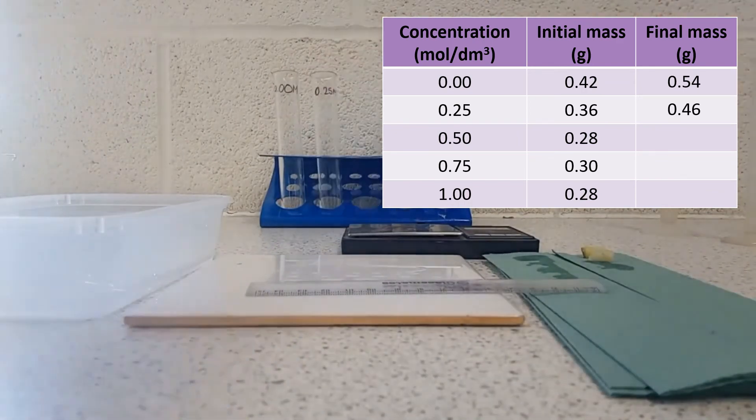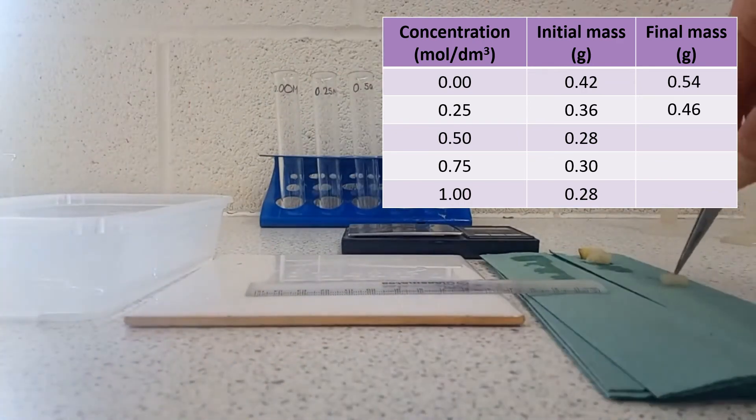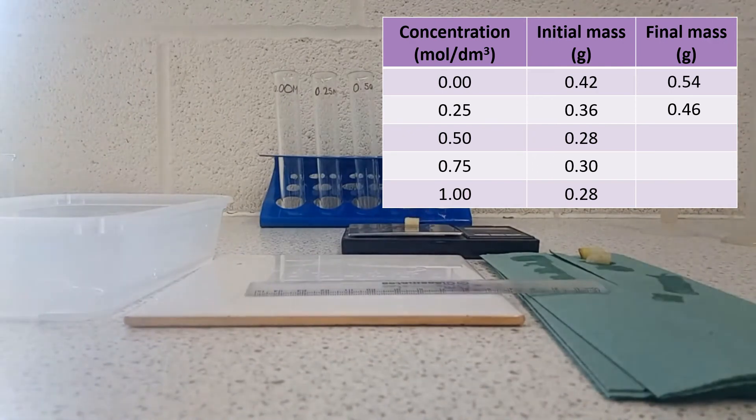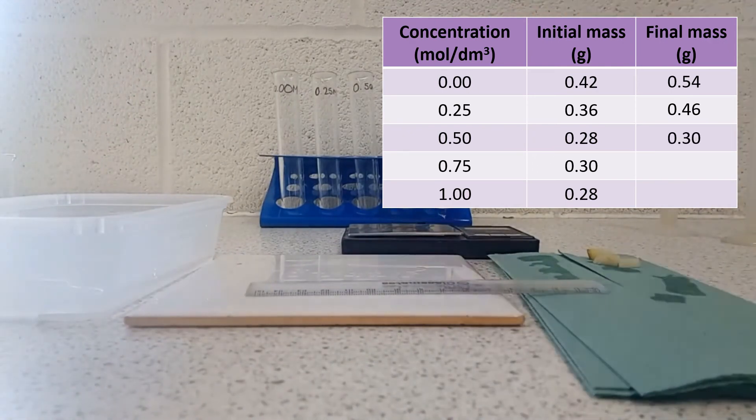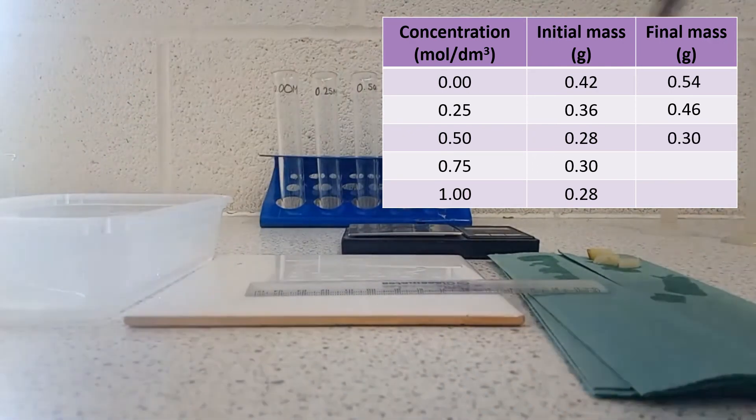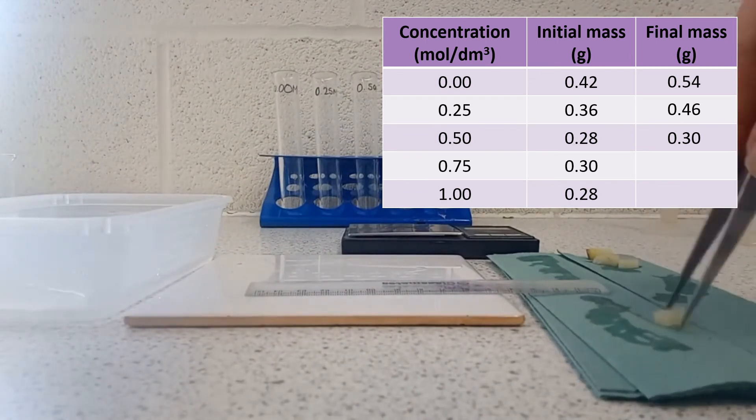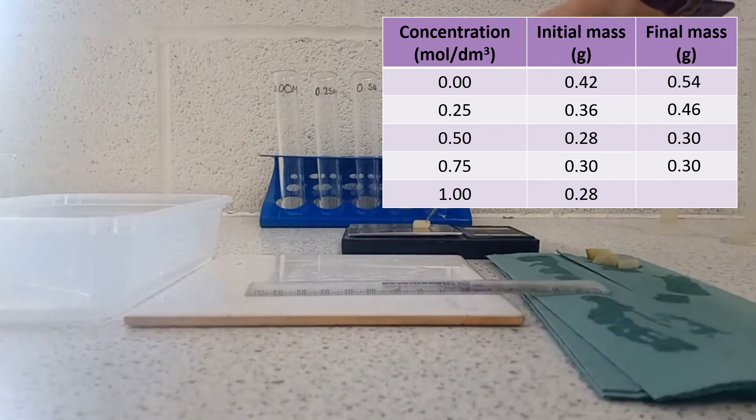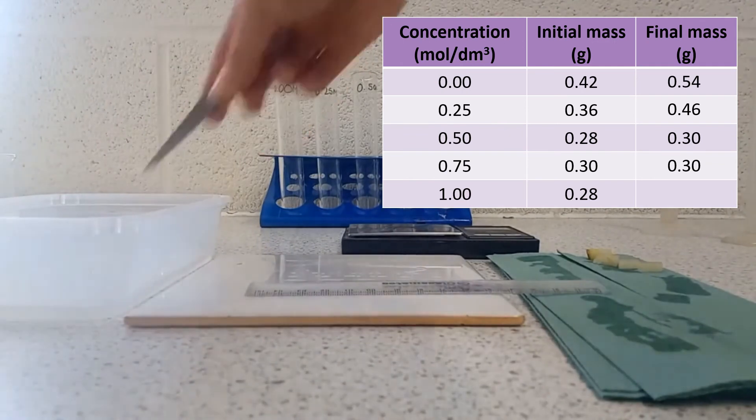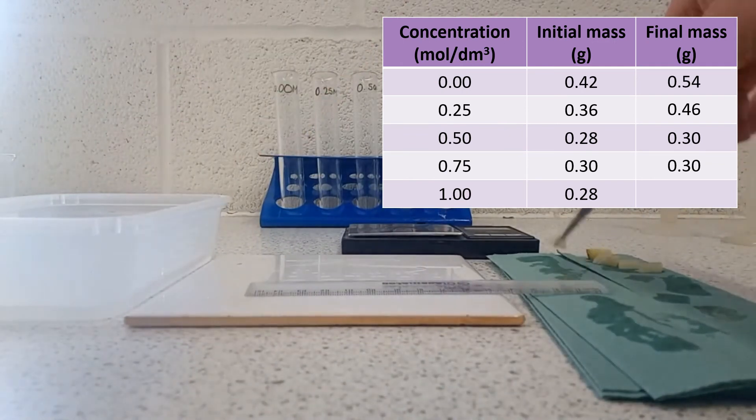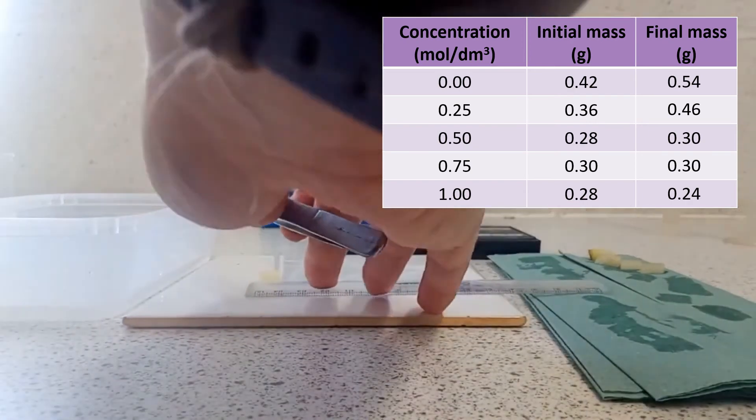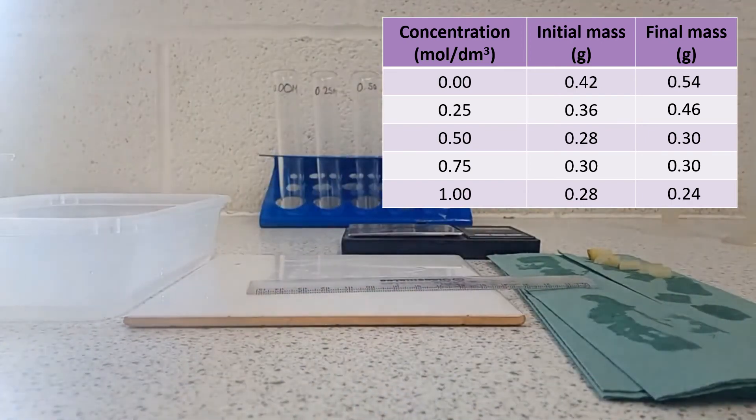Then my second piece now has a mass of 0.46. My third piece now has a mass of 0.30. This piece that was in the 0.75 now has a mass also of 0.30, and my final piece has a mass of 0.24. And that one, I can see, has also shrunk slightly, which again is what I would expect.